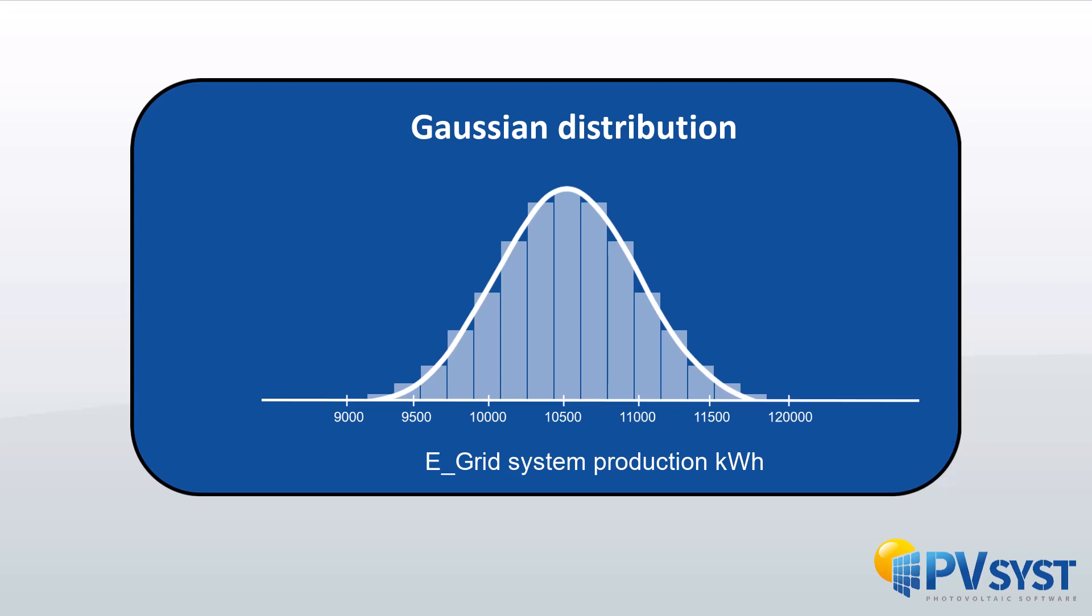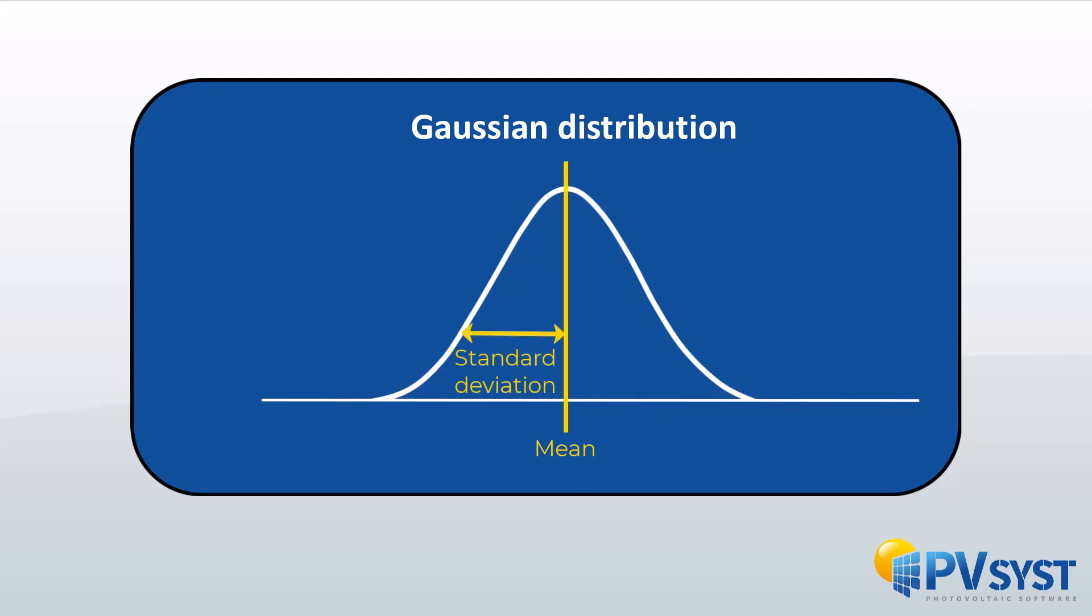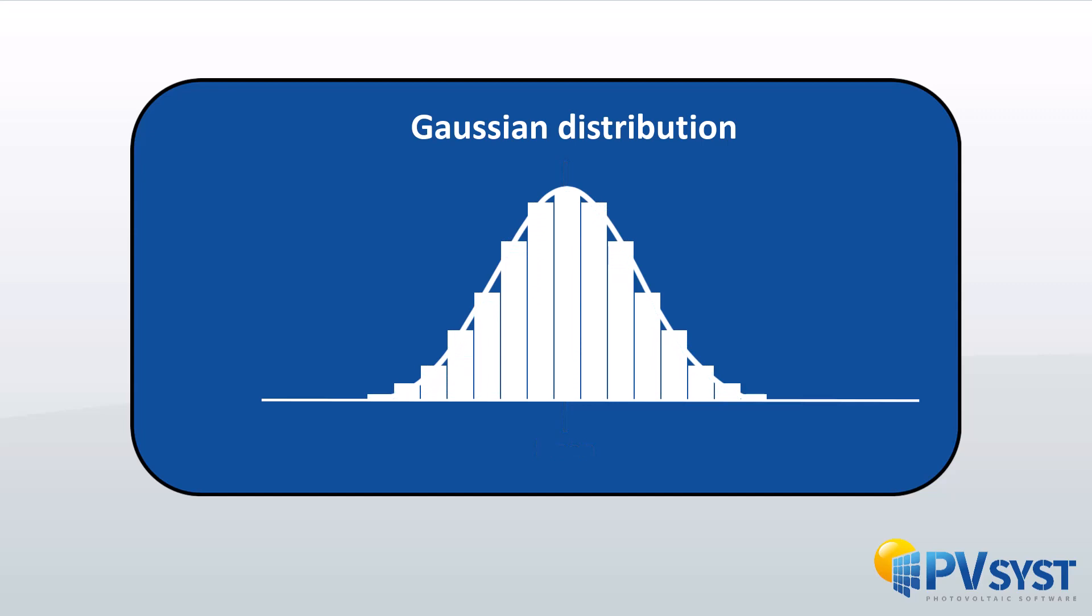Let us start by further explaining the concept behind the Gaussian distribution as well as the role of the mean value and the standard deviation. The normal or Gaussian distribution describes the tendency for data to cluster around a central value. This value is the mean. Some data will then fall below the mean and other above the mean.